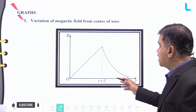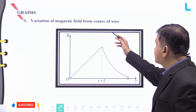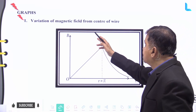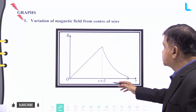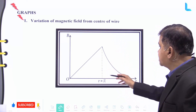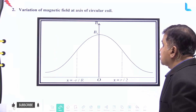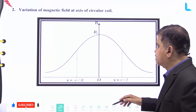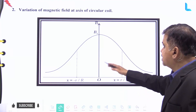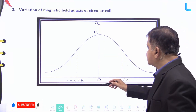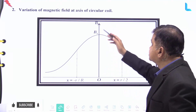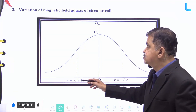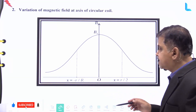You can see the graph of the variation of magnetic field from the center of the wire — this figure represents the variation of magnetic field B with respect to r. Similarly, this graph shows the variation of magnetic field at the axis of a circular coil, depicting the variation of B with respect to the axis, with r as the x-axis.